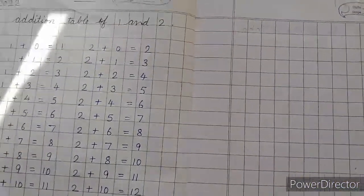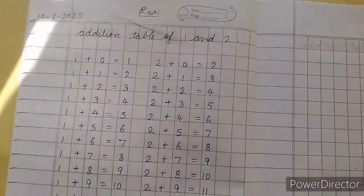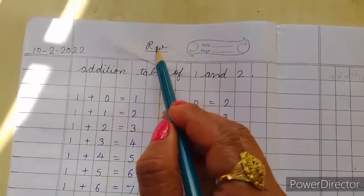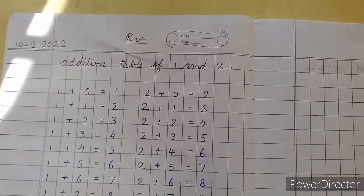First of all, you will write the date, today's date, then RW, write the matter.